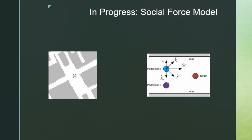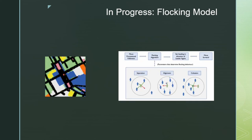The next approach I'm currently working on — still in progress with no results yet — is the social force model. All processional followers move in certain relationships to their companions, the leader, and other obstacles: they can't run into anything, they're supposed to follow the leader, and mostly do, but at some point they actually go the opposite direction from where they're supposed to. That's something I'm still working on.